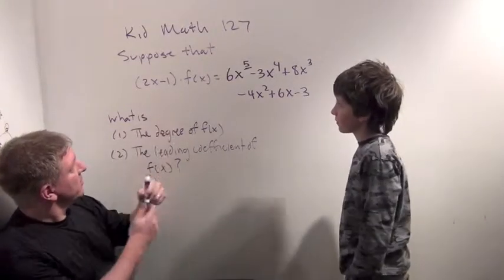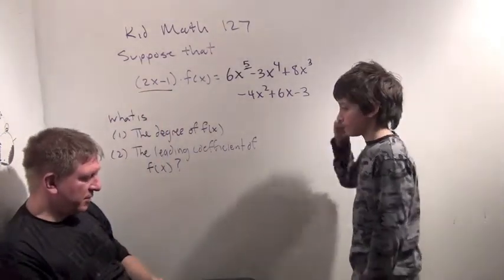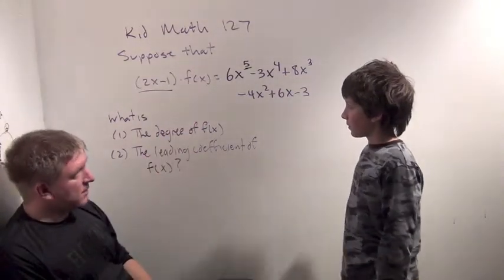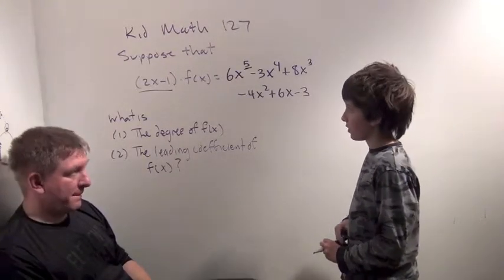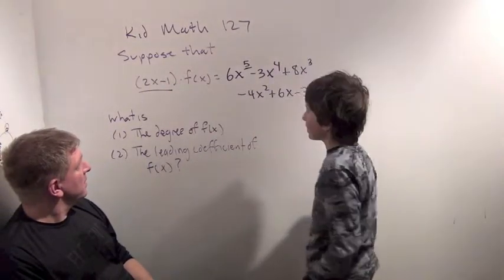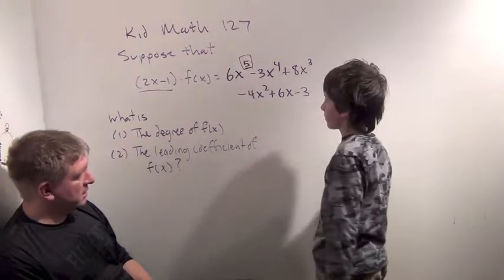Okay, what's this polynomial's degree? 1. Very good. All right, so how would you figure out what the degree of the polynomial f of x was? Well, it has to have an x to the 4th in it. Why? Because this polynomial doesn't have anything higher than 1, and there's an x to the 5th in here.